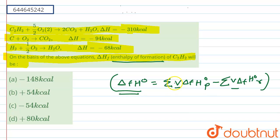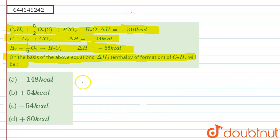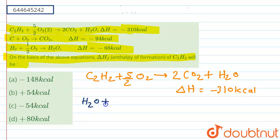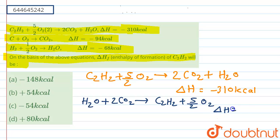Looking at the first equation, C₂S₂ plus 5/2 O₂ gives 2CO₂ plus S₂ with a ΔH of minus 310 kilocalorie. If we reverse this equation, we get S₂ plus 2CO₂ gives C₂S₂ plus 5/2 O₂, and the ΔH of the reaction becomes positive, that is plus 310 kilocalorie.